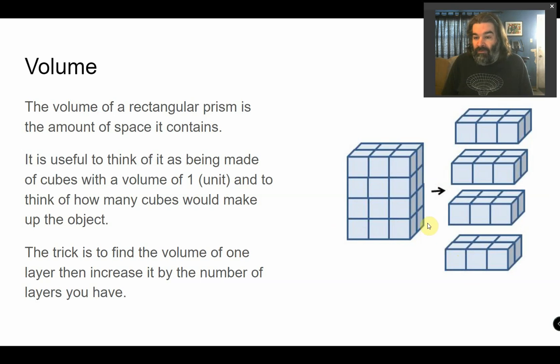For example, the bottom of this is 2 by 3, which means there would be 6 cubes. There are 4 levels, so it would be 6 times 4, so 6, 12, 18, 24. There would be 24 total units of volume.